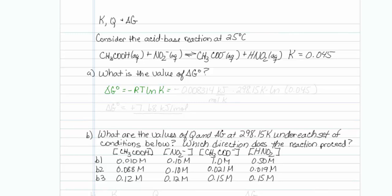So that would be minus 0.008314 kilojoules per mole kelvin times our temperature, 298.15 kelvin, times the natural log of 0.045. Putting that into our calculator, we will get plus 7.68 kilojoules per mole. That is the free energy at the standard state.